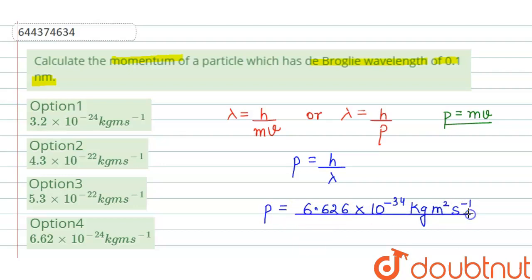Divided by lambda, which is the de Broglie wavelength. It is given as 0.1 nanometer.